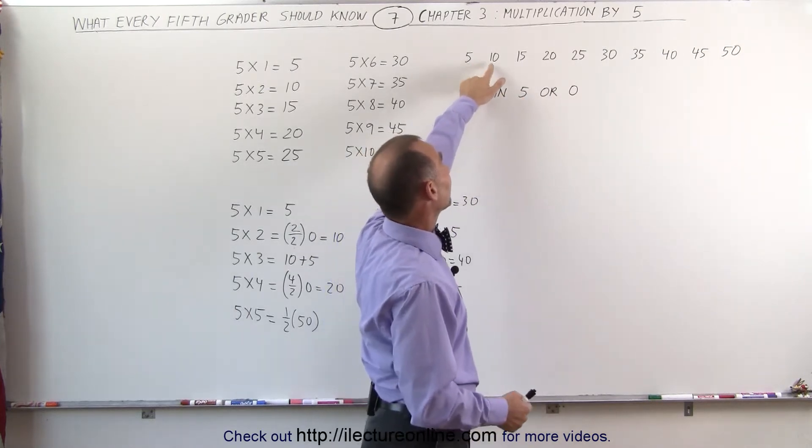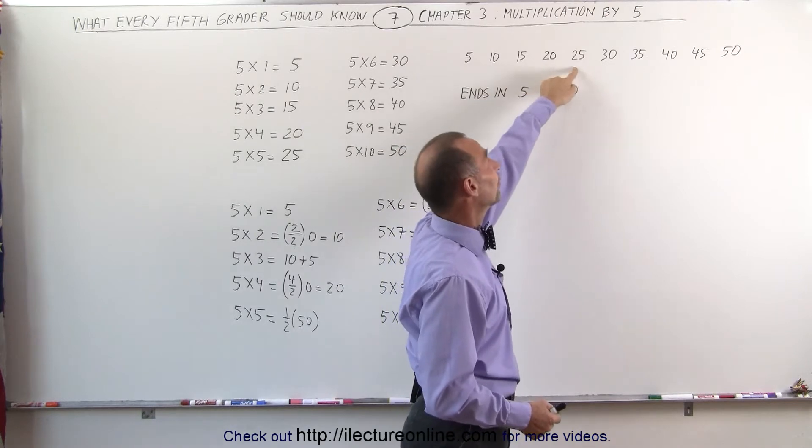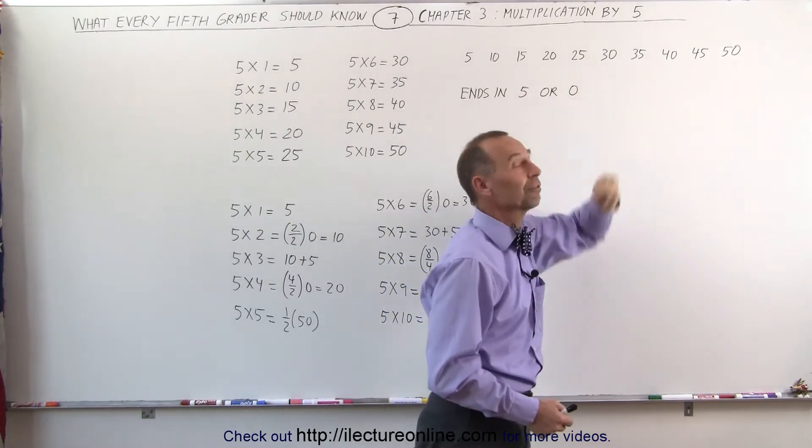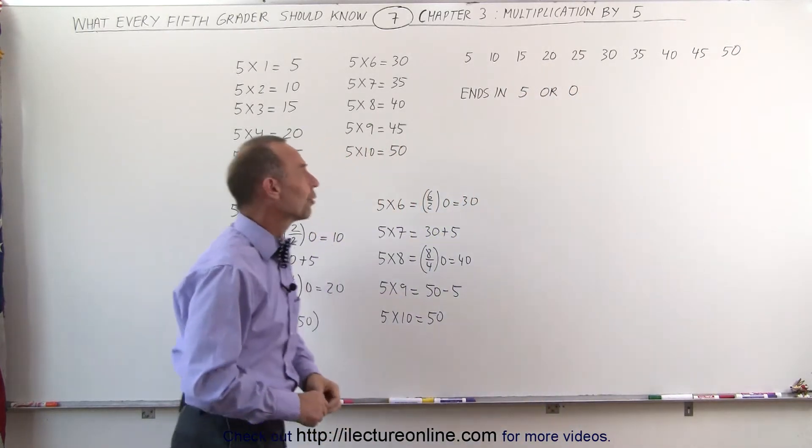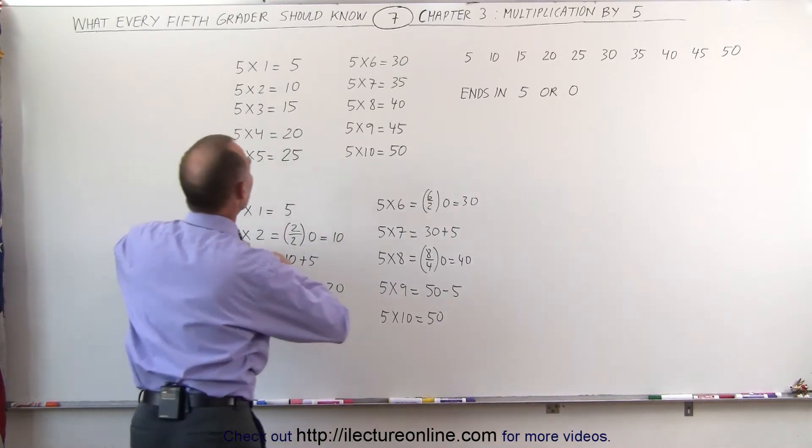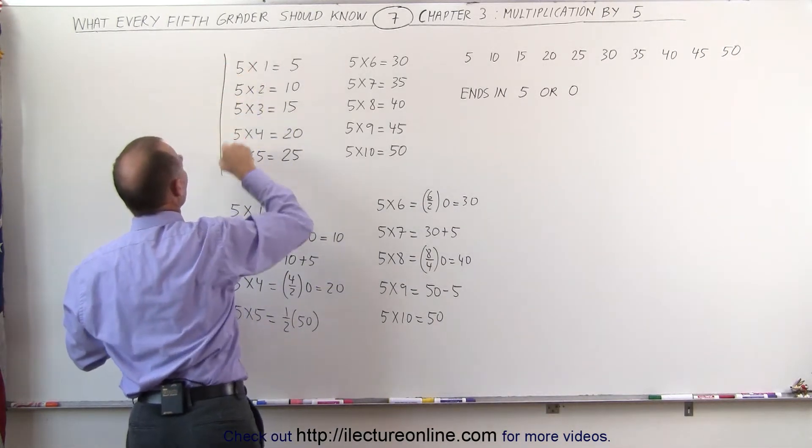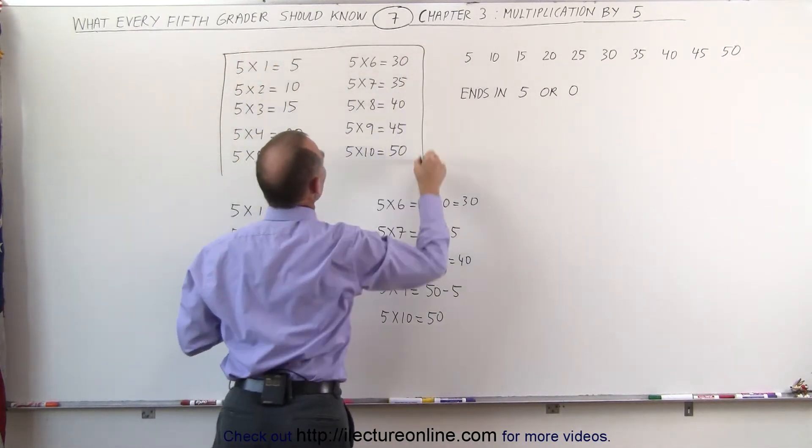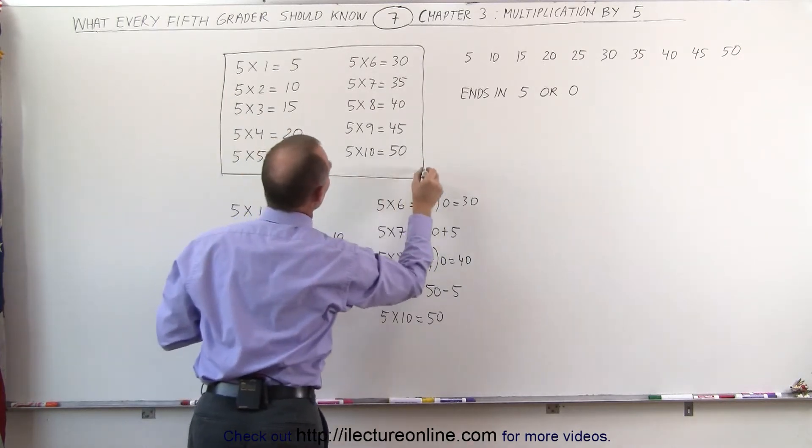So the first answer was 5, then 10, 15, 20, 25, 30, 35, 40, 45, 50. That seemed fairly straightforward and fairly easy, and that's what the multiplication tables indicate. If you take a look at all the answers, you can see that it always ends either in a 5 or a 0.